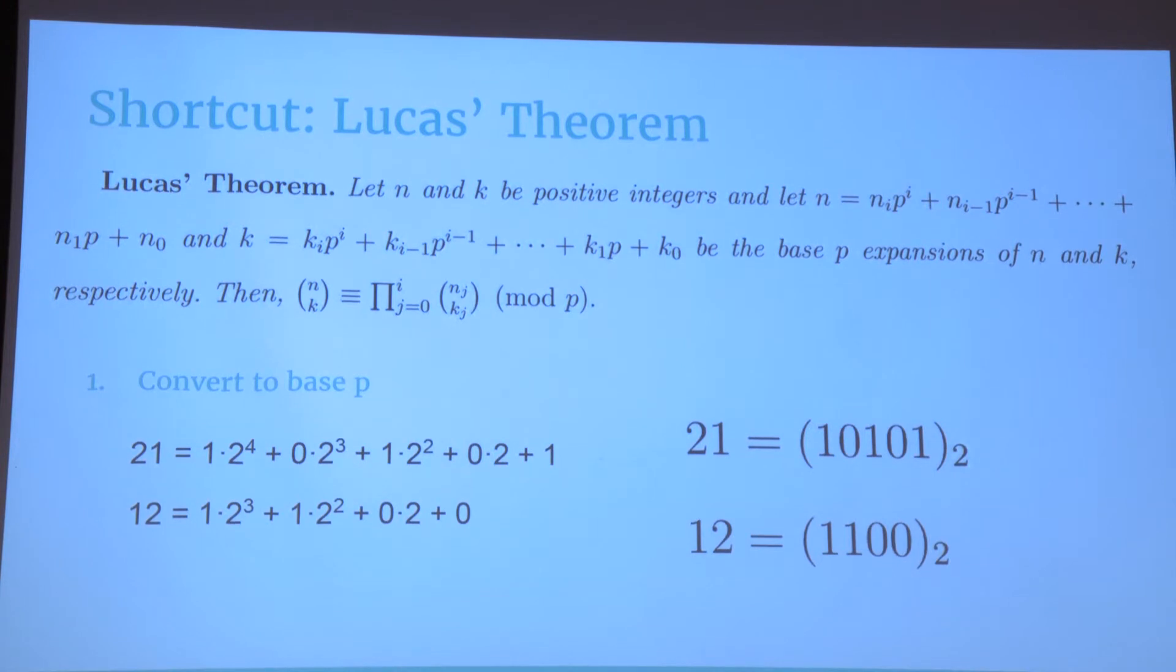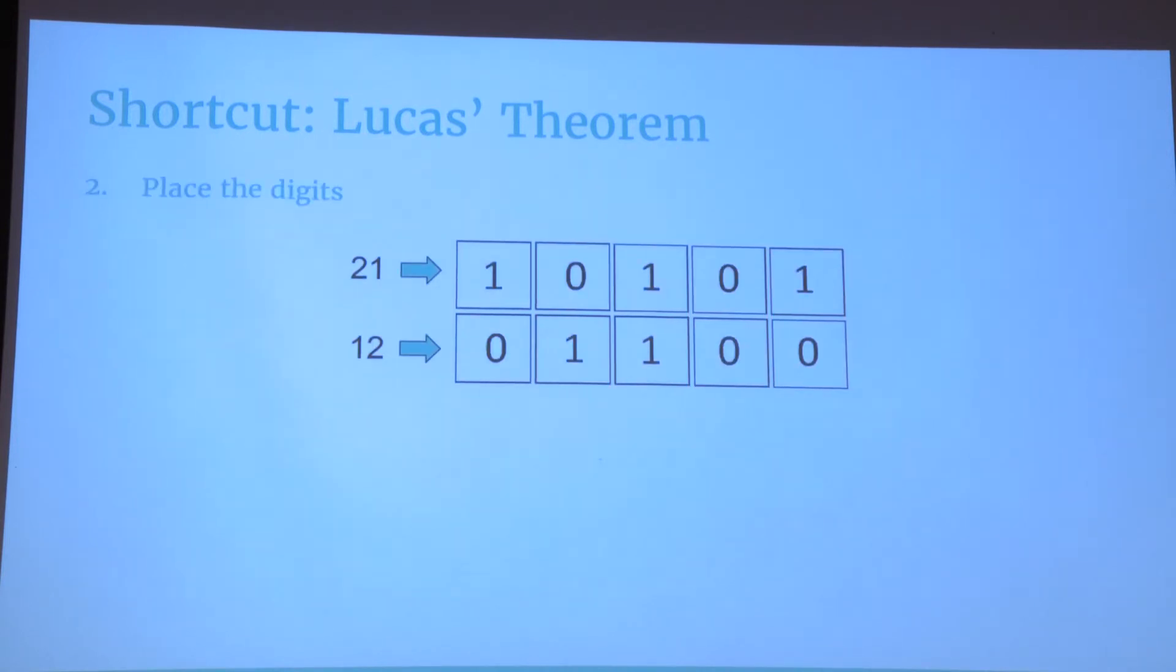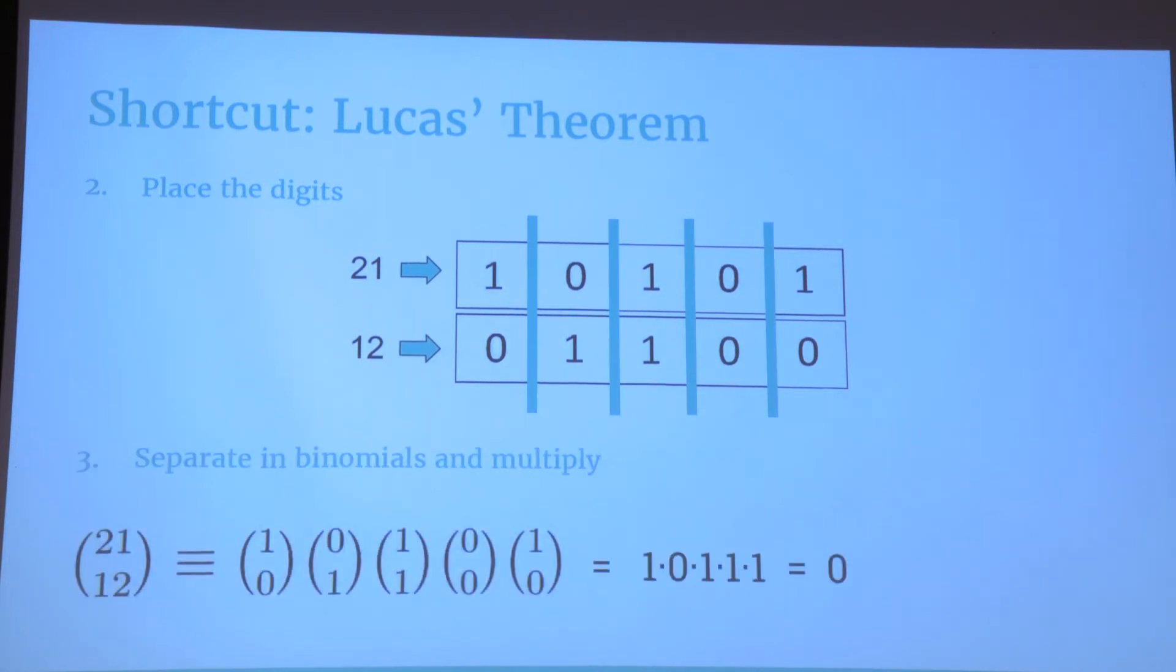It only requires three easy steps. First of all, we have n, k, and p, which in this example are 21, 12, and 2. We represent n and k in base p, and converting a number in base p basically means that we express this number as a sum of consecutive powers of that prime, as you can see here in the example. We place the base p digits of n above the base p digits of k. We split the digits. We convert them into little binomial coefficients. As you can see here, then we compute these little binomial coefficients, we multiply the results, and what we get is a remainder. In this case, 21 choose 12 is congruent to 0 modulo 2, which means that 21 choose 12 is divisible by 2.